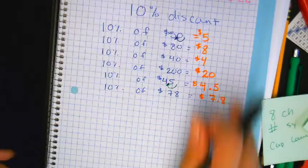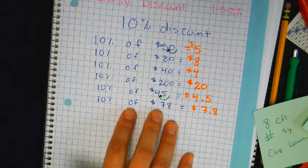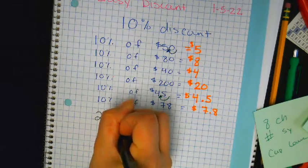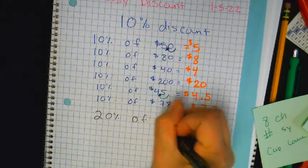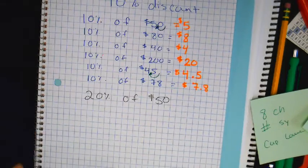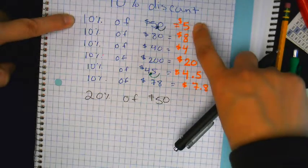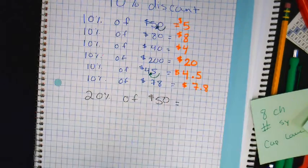Okay, let's take it up one notch. How many of you feel okay about this shortcut — like okay, I see it, I get it, I might use it, might not use it? Cool. What if I turn it into 20%? 20% of — let's see who can do 20% of 50 using the shortcut. If you know 10% is 5, what would 20% be?